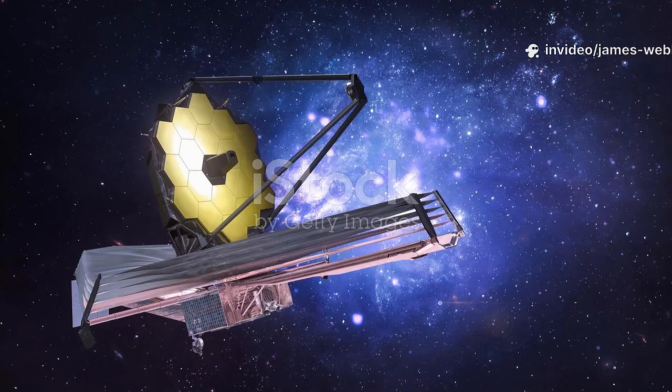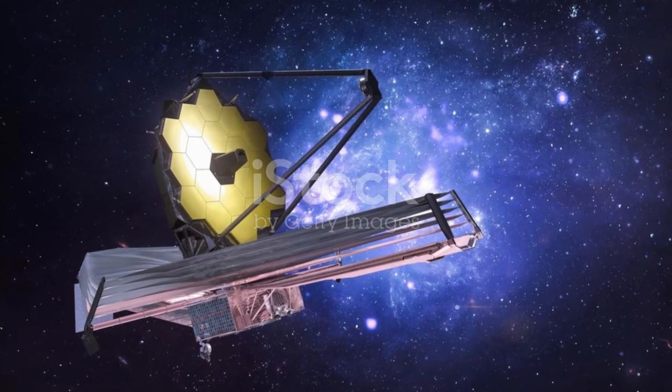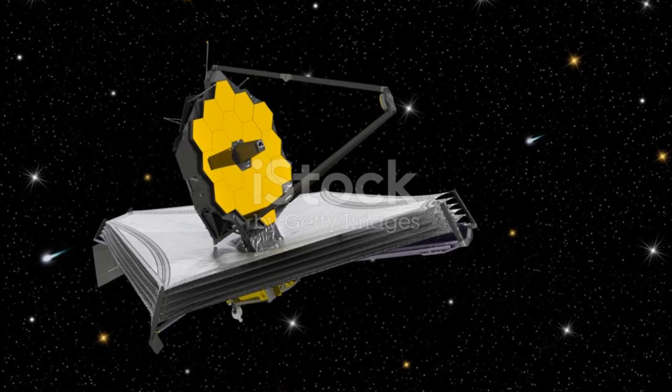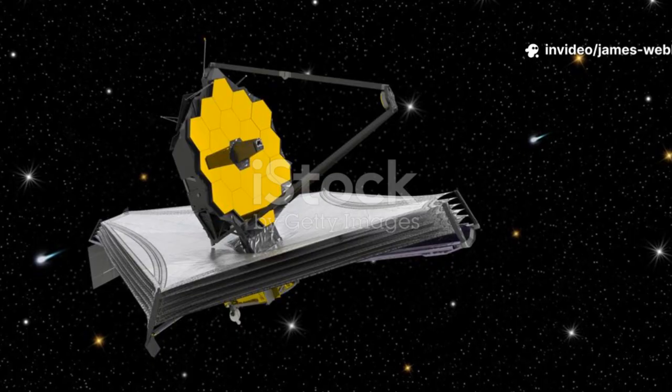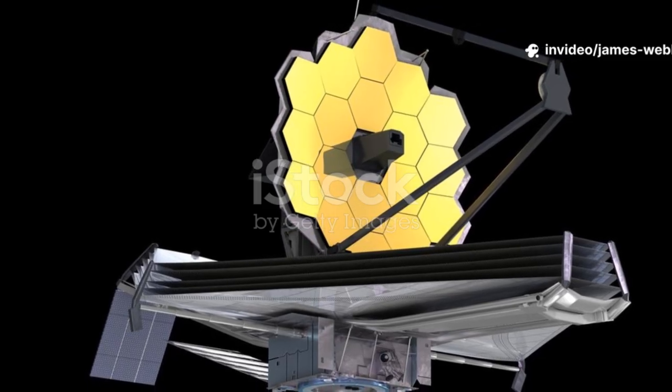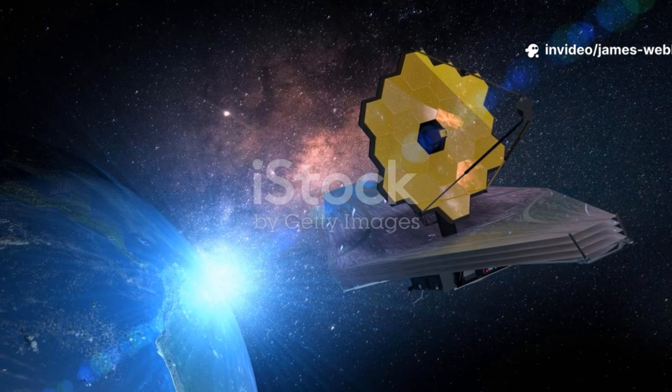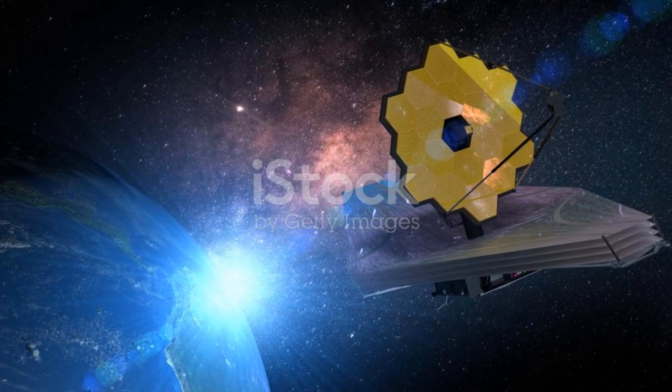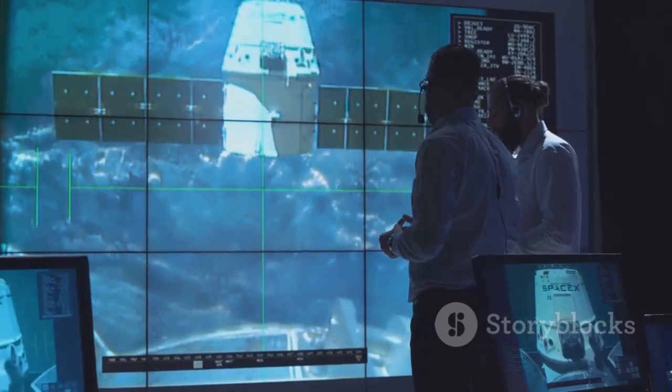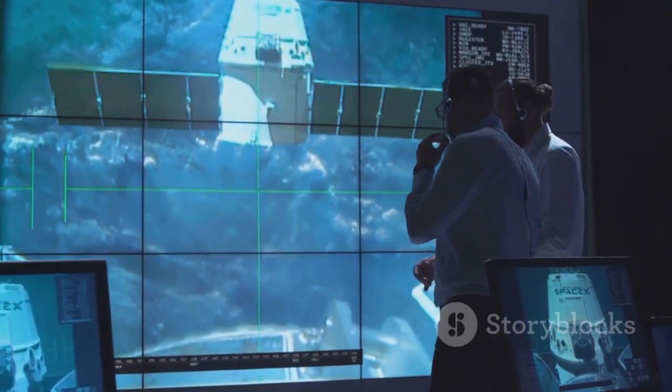To peer into the secrets of such a distant and faint object, we needed a very special eye. Humanity has now built such an eye. It is called the James Webb Space Telescope. Floating silently in the cold vacuum of space, a million miles from Earth, this observatory is one of the most magnificent achievements of human ingenuity.